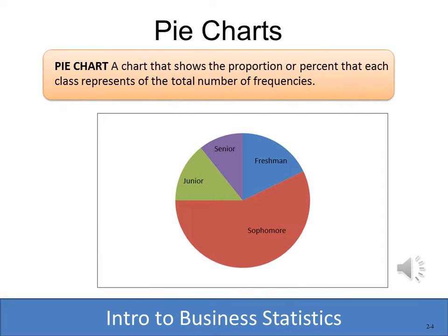A pie chart is another graph that can represent a frequency distribution. The pie represents 100%, and each of the slices of pie represent the percentage of the category. I don't have the percentages shown in this particular case, but we can just get a graphical representation of sophomores being more than 50% of the entire makeup of the class.